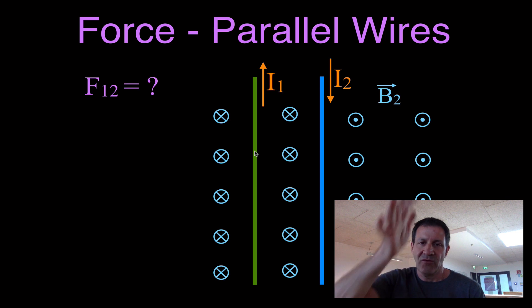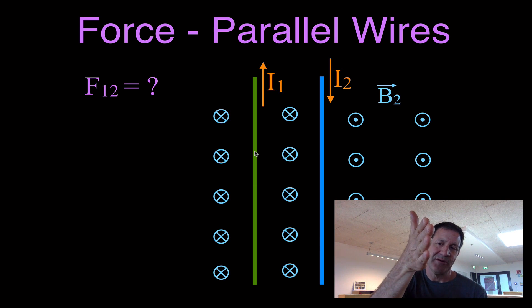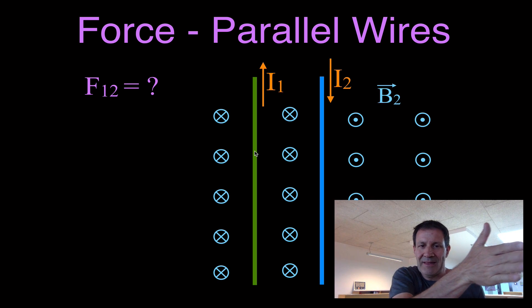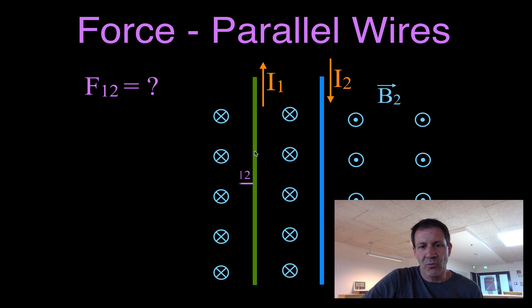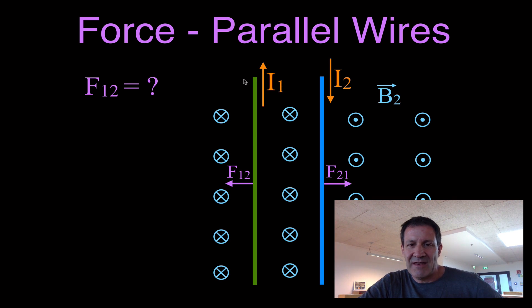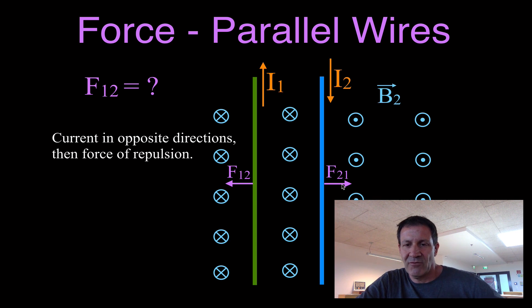Using the right-hand rule, we determine the direction of the force on wire one from wire two. Point your thumb upward in the direction of the current, place your fingers pointing into the screen for the magnetic field direction, and your palm points to the left. So the force on wire one is to the left, and the force on wire two is to the right — meaning that when currents flow in opposite directions, there is a force of repulsion between the two wires.